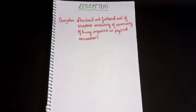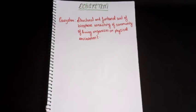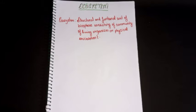Ecosystem can also be defined as a structural and functional unit of the biosphere containing the community of life, with a lot of interacting and exchanging of material between them. Non-living things can survive in isolation, but living organisms need each other to make things happen.